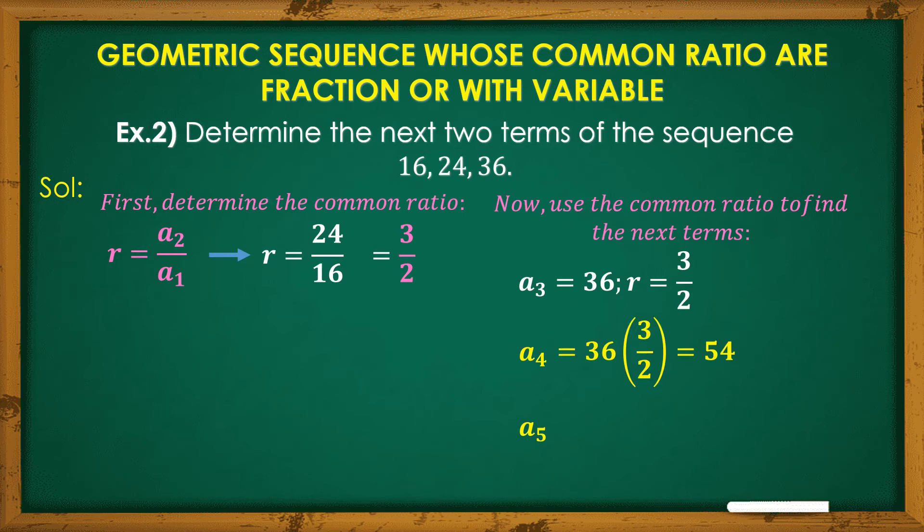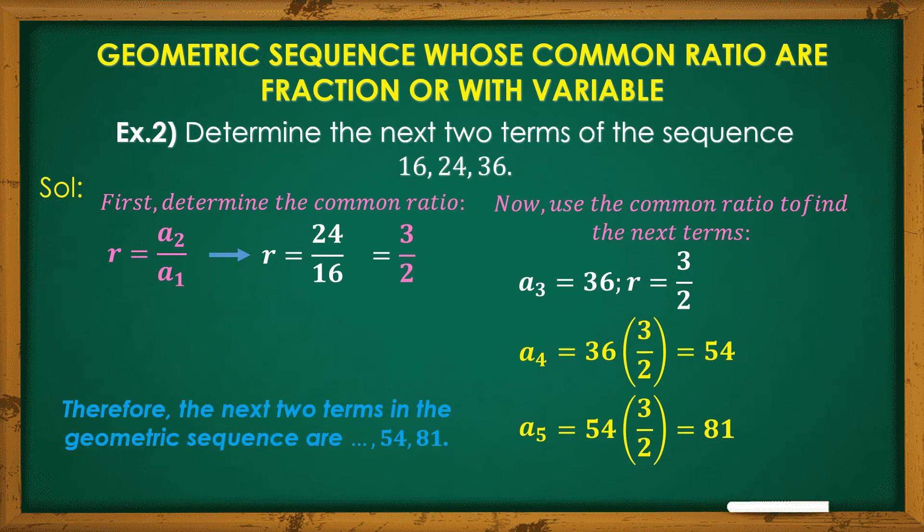Since meron tayong a sub 3 na 36, and yung common ratio nya is 3 halves, Siyempre, yung inahanap natin yung next 2 terms ay yung a sub 4 at yung a sub 5. Now, to get the solution, we will use the a sub 3, 36 multiplied with the common ratio which is 3 halves, we will get 54. Paano nga ulit magmultiply ng whole number to a fraction? Tama! Multiply the whole number to the numerator, then divide it by the denominator. So, 36 times 3 is 108. Divided by 2, it's 54. Also, with a sub 5, gamit sa a sub 4 na 54, multiply it by the fraction 3 halves or multiply 54 by 3 divided by 2, we will get 81. Therefore, the next 2 terms in the geometric sequence in example number 2 are 54 and 81.